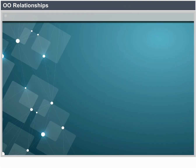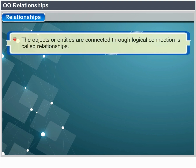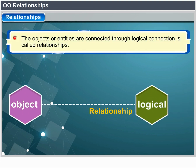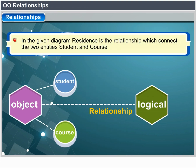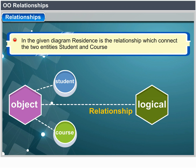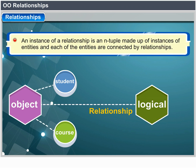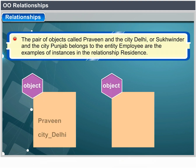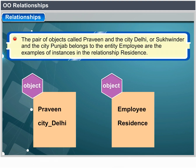Relationships represent logical links between two or more entities or objects. Residence is an example of a relationship between the entities city and employee; exam is an example between student and course. An instance of a relationship is an n-tuple made up of instances of entities — one for each entity involved. For example, the pair of objects employee Johansin and city Stockholm, or employee Peterson and city Oslo, are instances of the relationship residence.